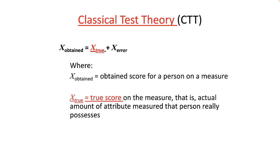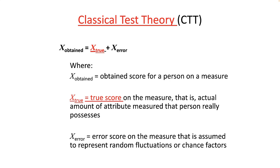By taking a test again and again, we can eventually hone in on the actual unobservable true score. The error score is the score influenced by factors present at the time of measurement that distort individual scores, either over or under what they would have been on another measurement occasion. Reliability is all about minimizing error.